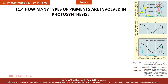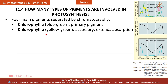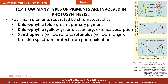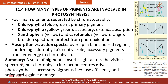Section 11.4: Four main pigments are separated by chromatography — chlorophyll A (blue-green, primary pigment), chlorophyll B (yellow-green, accessory, extends absorption), xanthophylls (yellow), and carotenoids (yellow-orange) — which broaden the spectrum and protect from photo-oxidation. Absorption and action spectra overlap in blue and red regions, confirming chlorophyll A's central role. Accessory pigments transfer energy to chlorophyll A, increasing efficiency and safeguarding against damage.